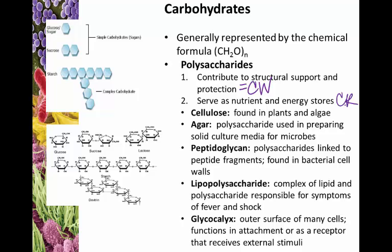Examples include cellulose, found in plants and algae as the most common cell wall component. Agar, which we use to make solid media, is actually a sugar — specifically a derivative of seaweed. Peptidoglycan is made of two monosaccharides — NAG and NAM — and is the main component of bacterial cell walls. The lipopolysaccharide layer found in the outer membrane of gram-negative bacteria, and even the glycocalyx — that sticky outer coating including capsules and slime layers — are also carbohydrate-based structures.